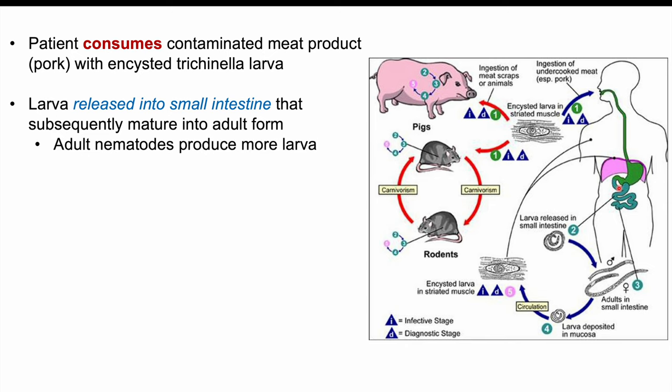The adult nematodes produce more larvae — they become adults and produce more larvae themselves. In some cases, the larvae can then invade the intestinal mucosa, which is the inner lining of the intestines. They can invade through that intestinal mucosa and enter into the circulation — the blood supply — of the patient.